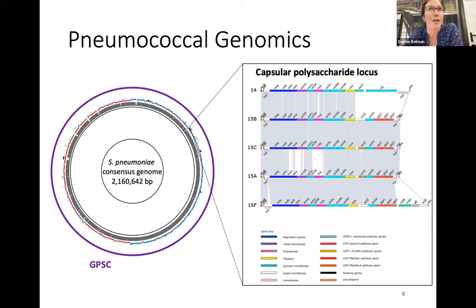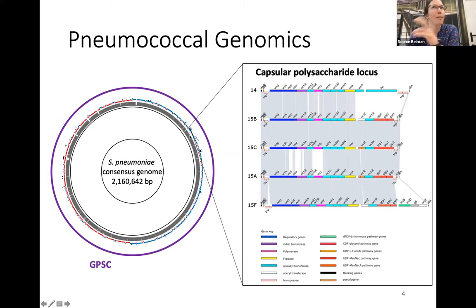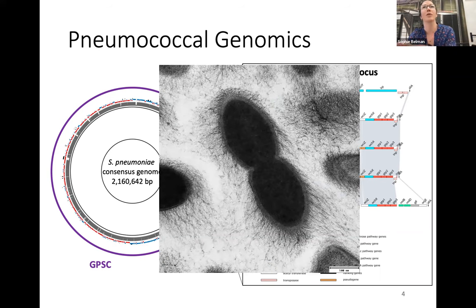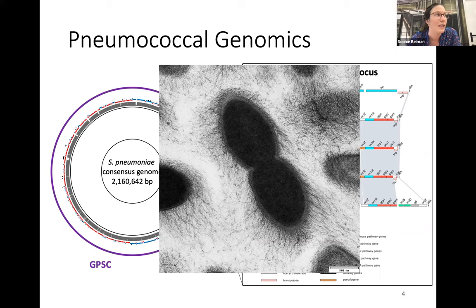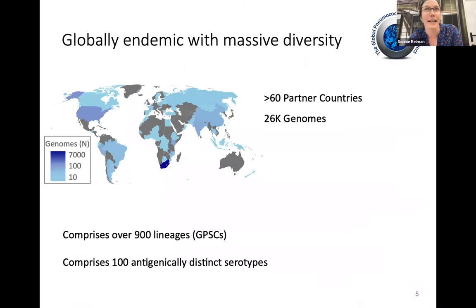I've highlighted the capsular polysaccharide locus, which is a tiny section of the genome. What this does is define the capsule surrounding the bacteria. It comprises a ton of different genes. Because of recombination, those genes shuffle about and produce different antigenically distinct capsules. Here's a diplococci — two pneumococci stuck together — and those hairs sticking out are some of the polysaccharides that the immune system sees when you're infected with the pneumococcus.